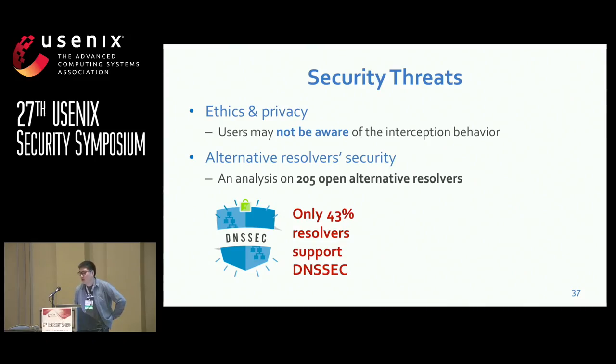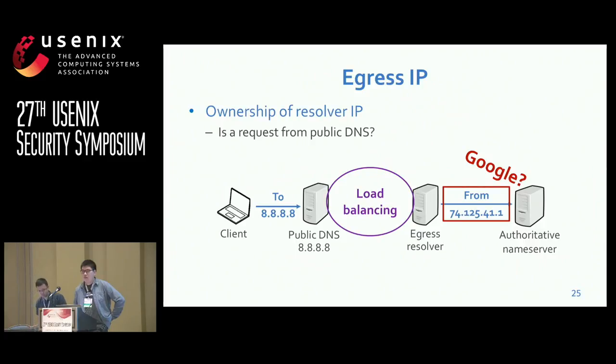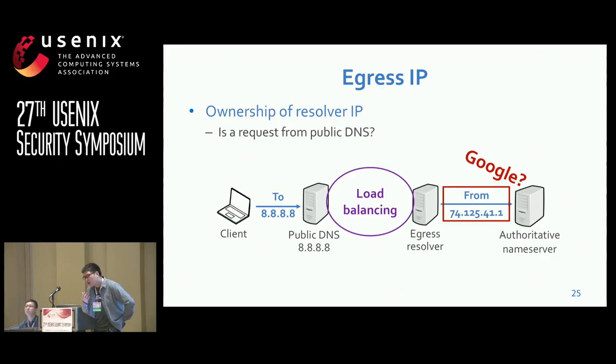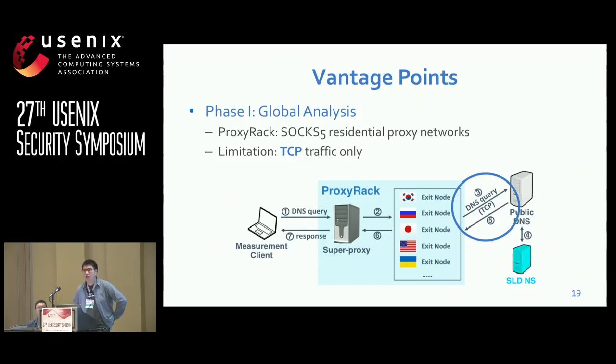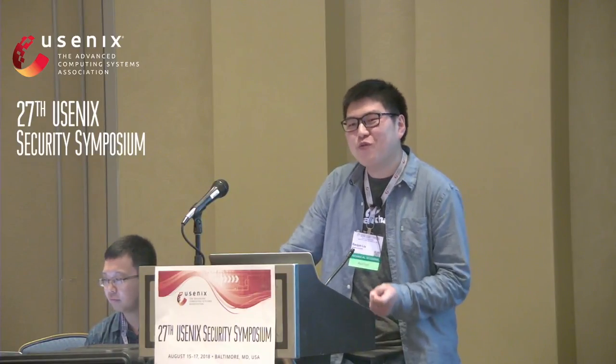Rob Jansen from U.S. Naval Research Lab — I was wondering how many vantage points you had from the proxy rack system. Millions. Did you consider using RIPE Atlas, which is a measurement system that provides vantage points? No. Do you think China will allow DNS over HTTPS when that starts getting deployed, to solve this? Very good question. We actually have other projects studying this problem. It's hard to say, but we are interested in it.